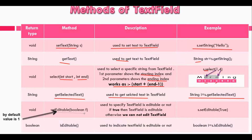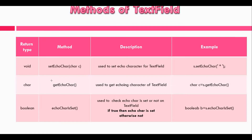The setEditable() method takes one boolean parameter and is used to specify whether the TextField is editable or not. If true, the TextField is editable; otherwise not. It can be used like this. The next methods are about echo char, which are used when we want the TextField to act as a password field. The first is setEchoChar(), used to set the echo character for the TextField. We can set any character like hashtag, dollar sign, percentage sign, or at sign.